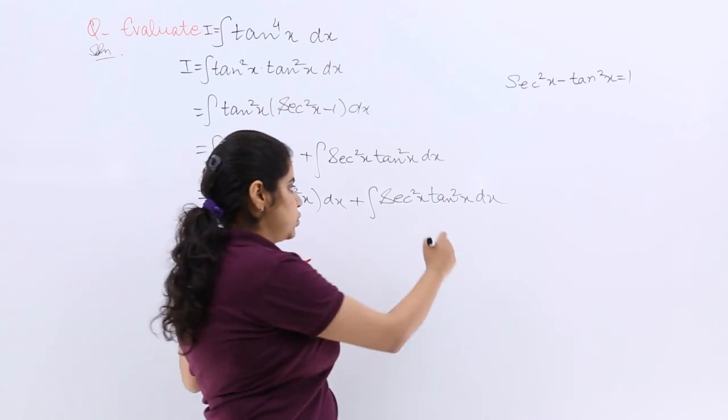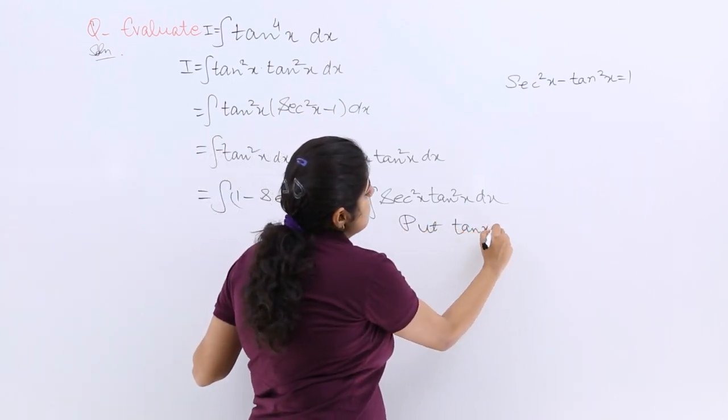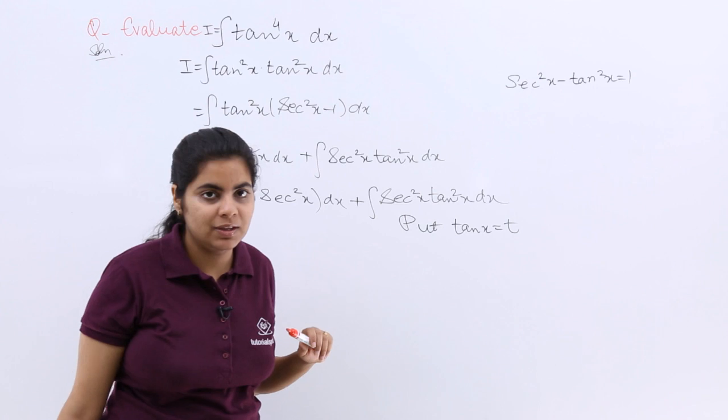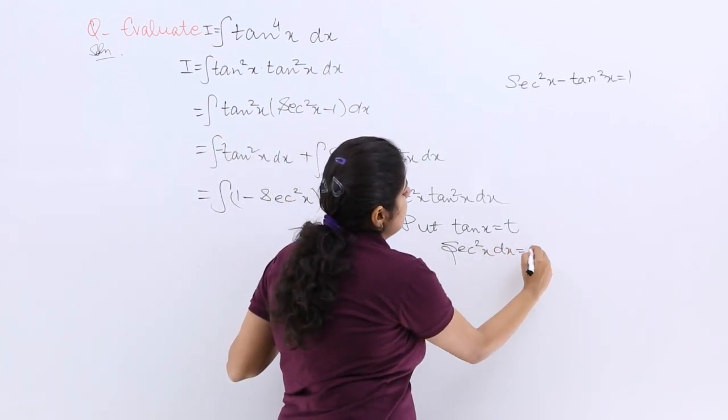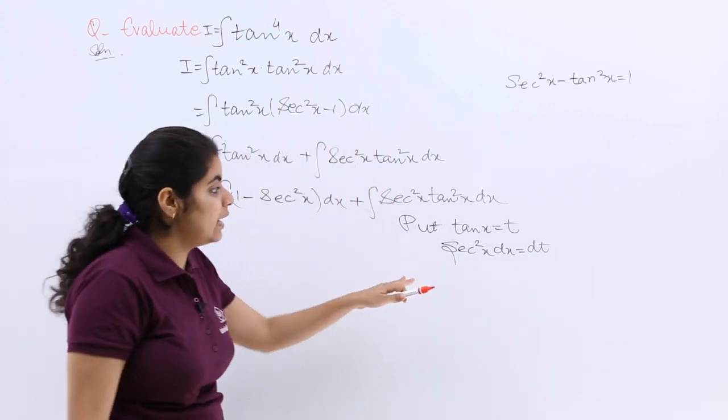If I put my tan x is equal to some t then differentiating both sides, secant square x dx is equal to dt that I am going to use.